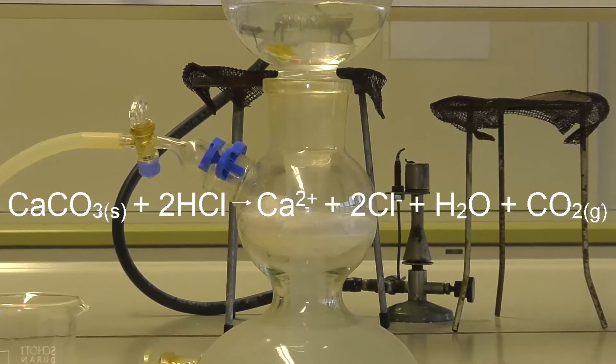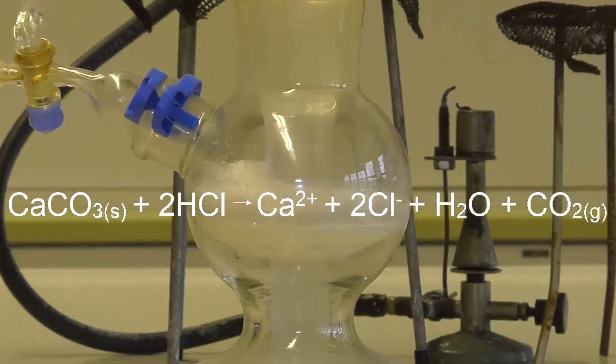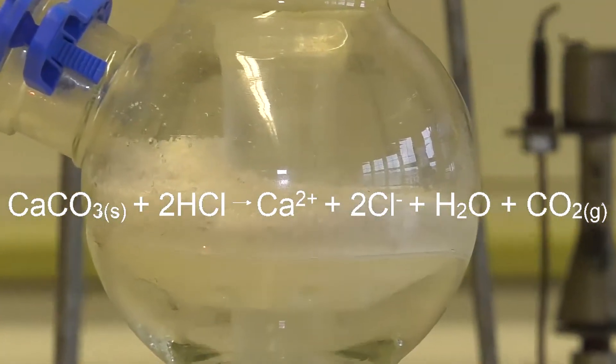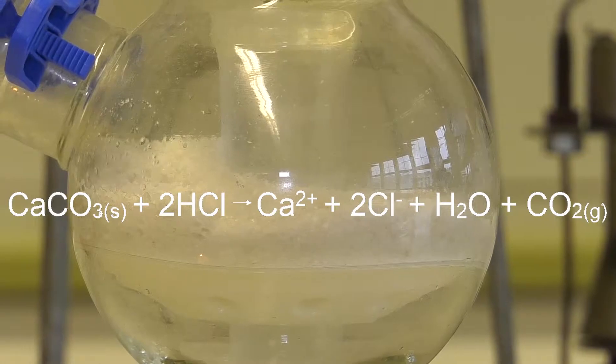you have to produce carbon dioxide with a reaction of limestone and hydrochloric acid. To produce the carbon dioxide, you need a Kipp's apparatus.